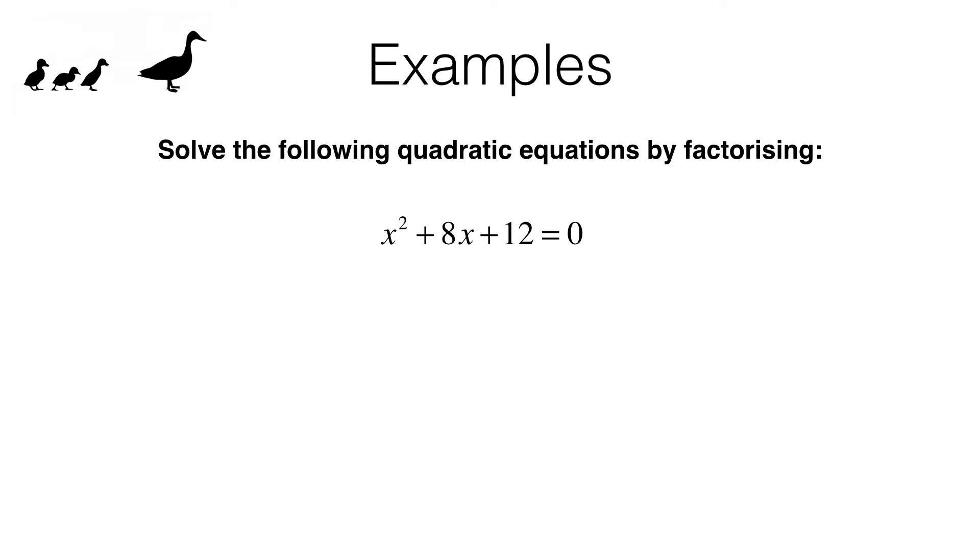In our first example we need to solve x squared plus 8x plus 12 equals zero. That means we need to work out the value or values of x that satisfy this equation.